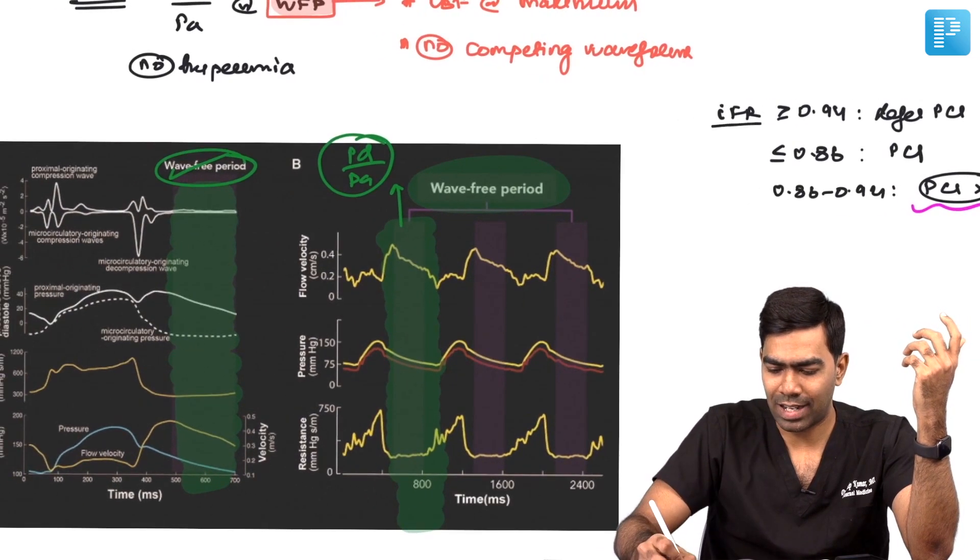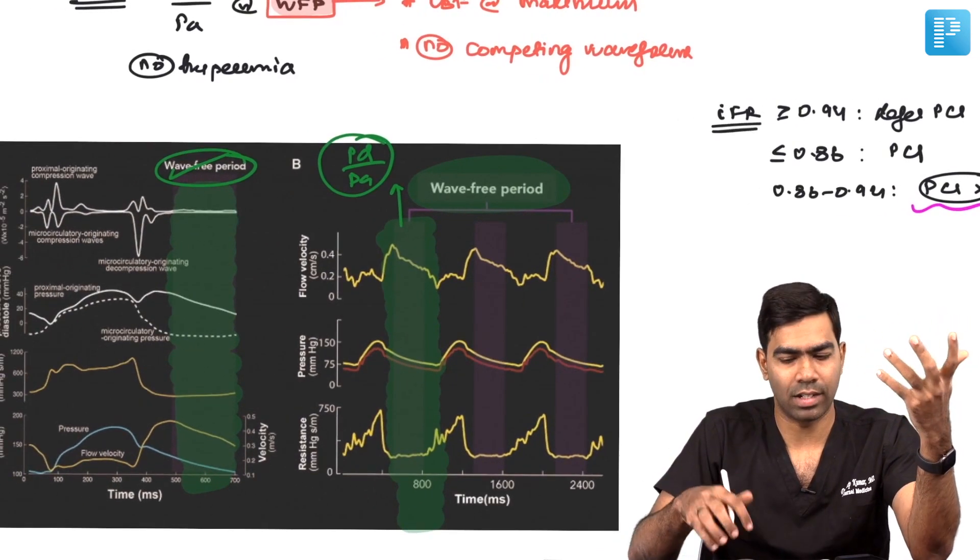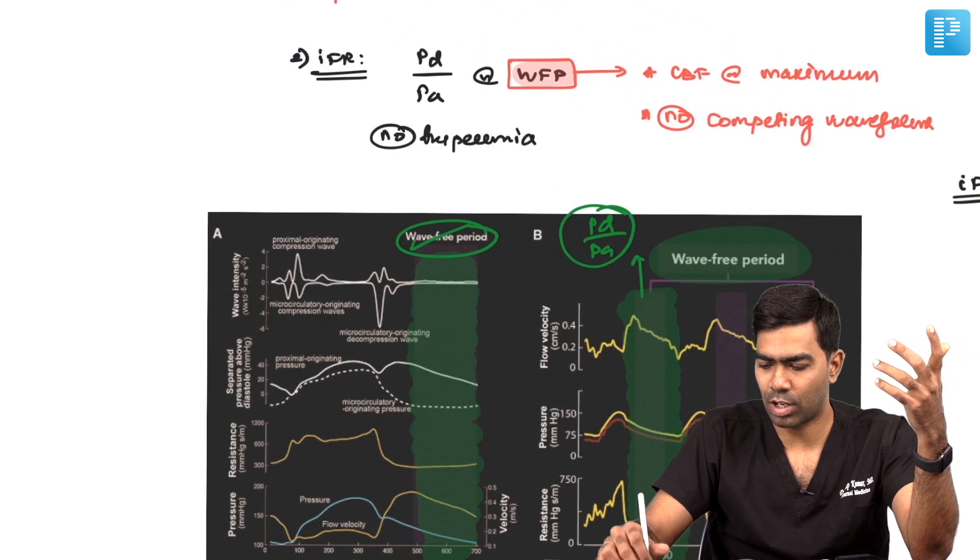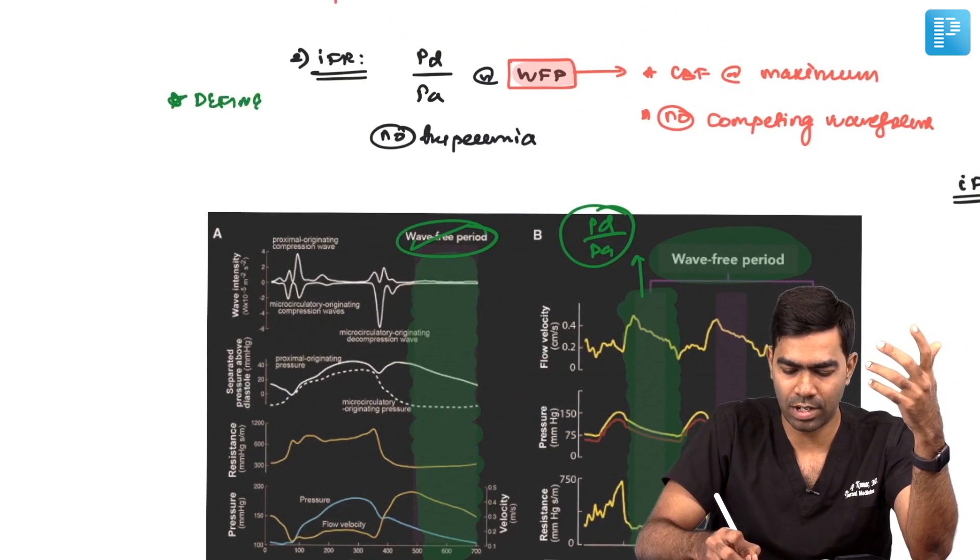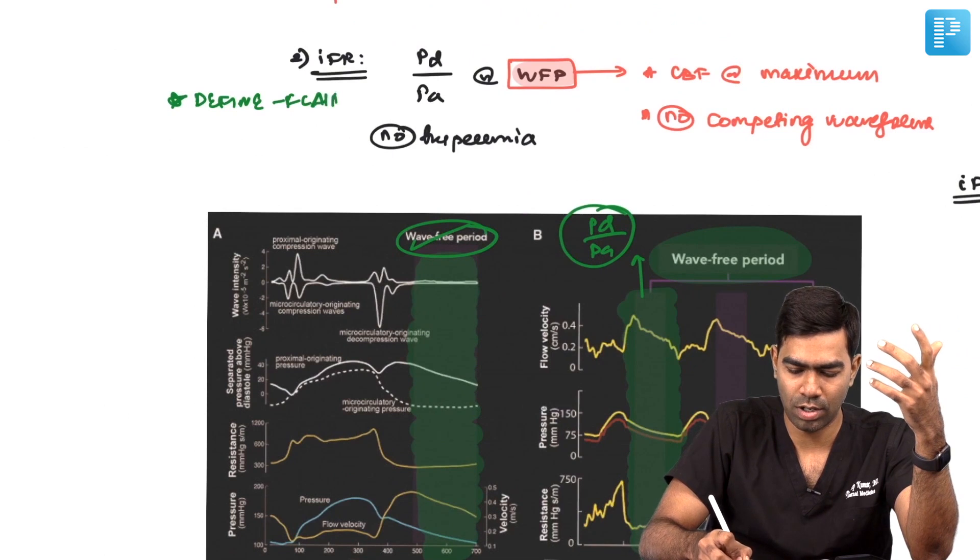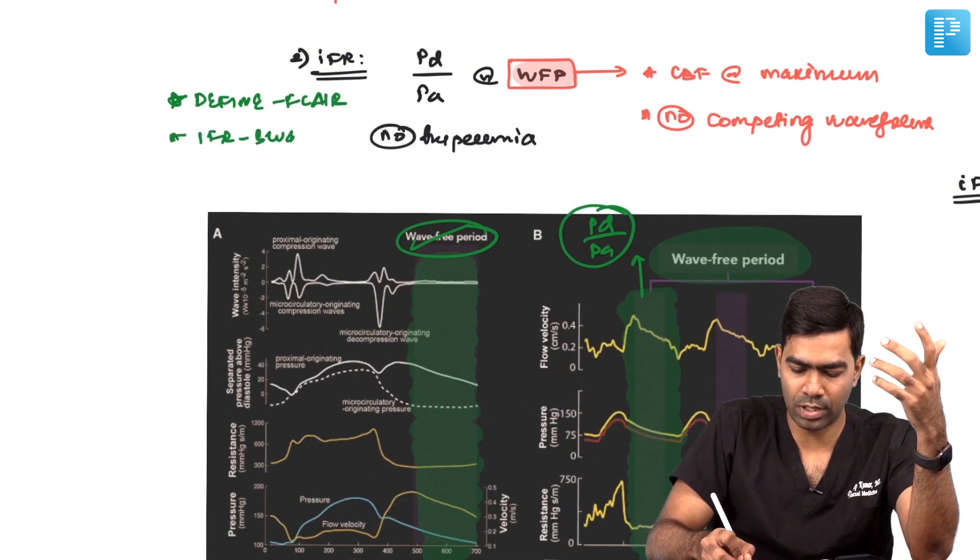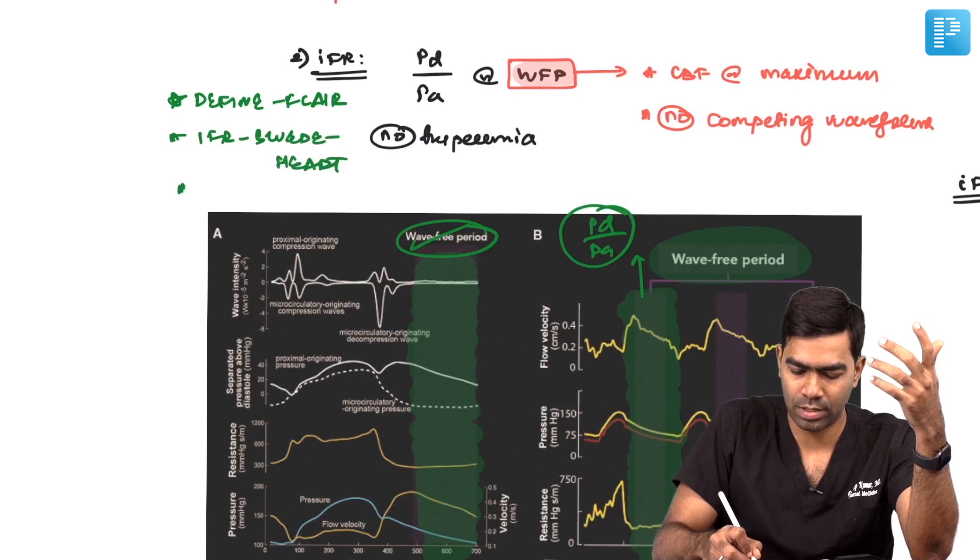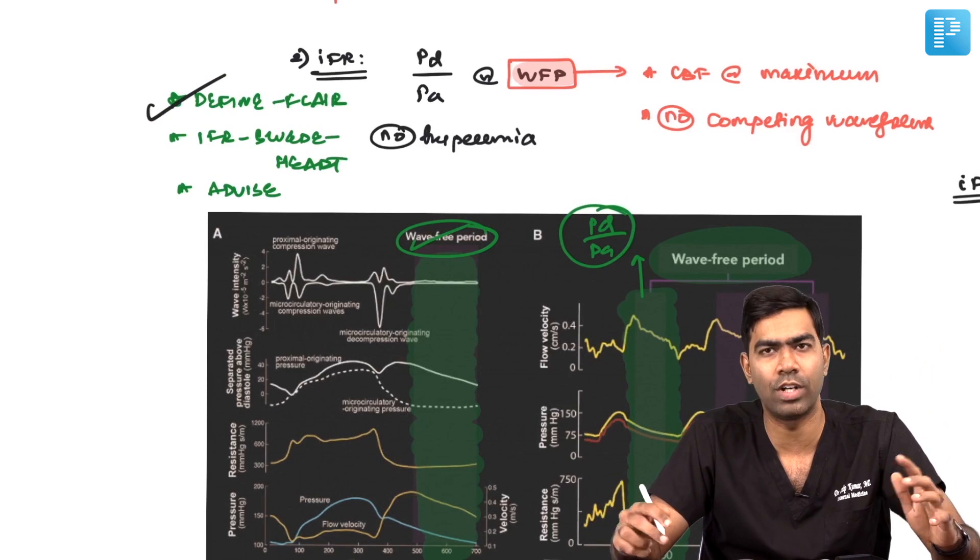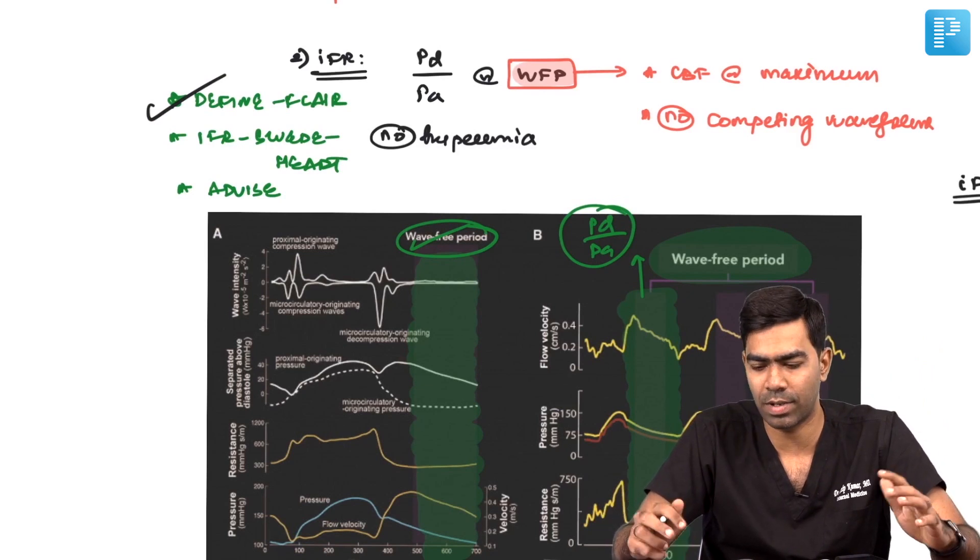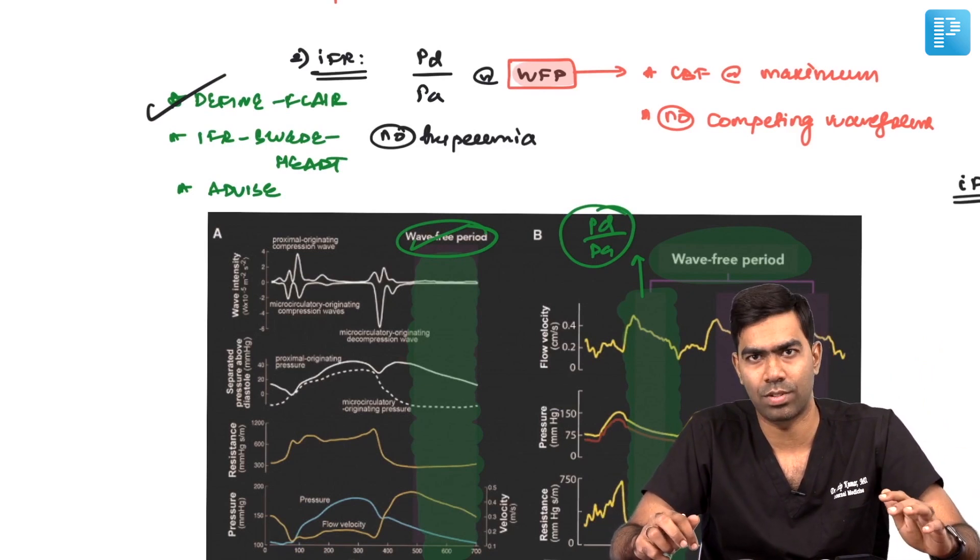What are the trials that show IFR is really significant and provide the basis for these cutoffs? You have three trials: the define FLIR study, which is the most important; the IFR SWEDEHEART done in Sweden; and the ADVISE study, which is very old. The define FLIR clearly defined the utility of IFR in clinical practice for patients where adenosine cannot be used.